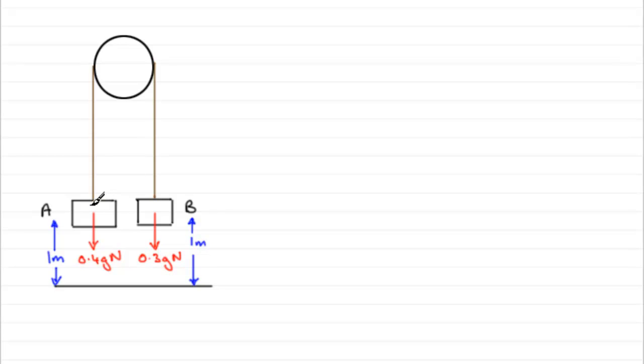Now, when it comes to the tensions in the string, the tension acts upwards on both of these, and that tension is exactly the same. We'll call it T newtons. It's exactly the same because we're told the pulley is smooth. If it weren't smooth, then these tensions would be different.